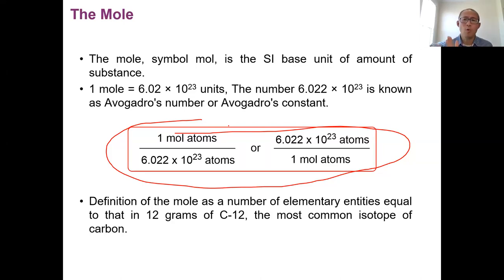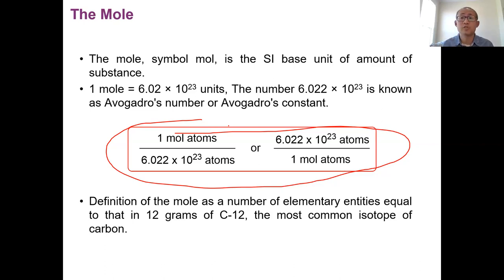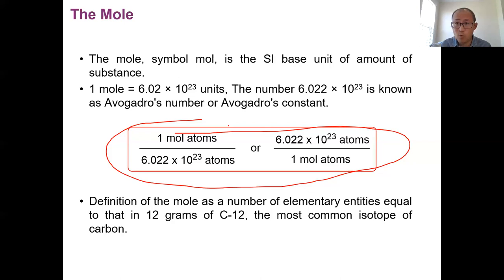You might wonder where this number came from. It actually came from a definition — it is the number of carbon-12 atoms in 12 grams of carbon-12. So if you have 12 grams of carbon-12, which is the most common isotope of carbon, the number of carbon atoms in it is 6.02 times 10 to the 23rd. We define that as one mole.